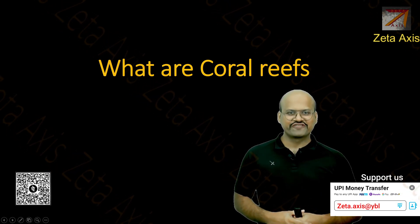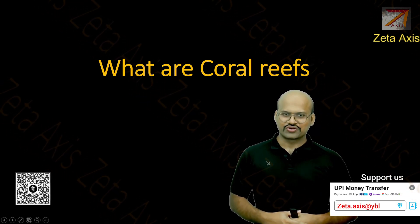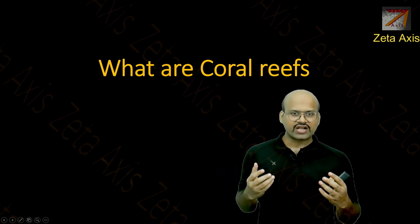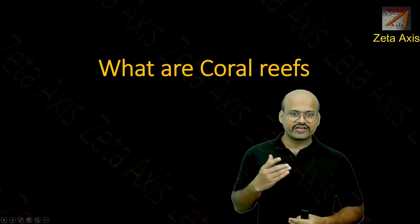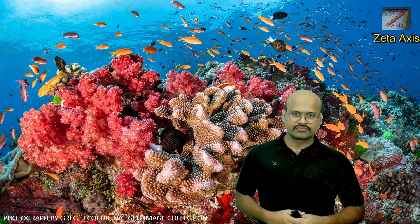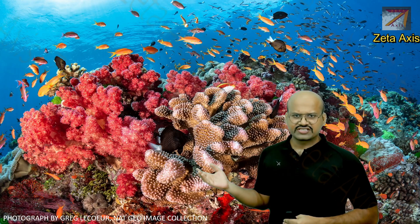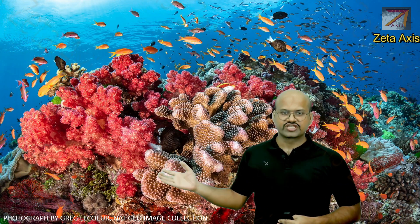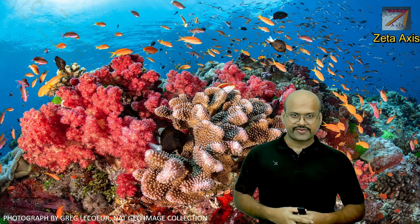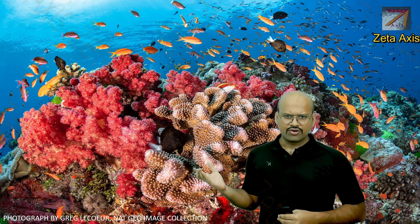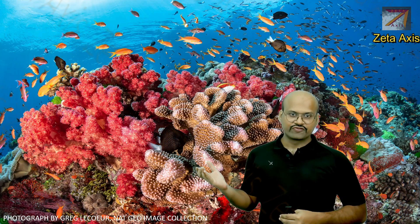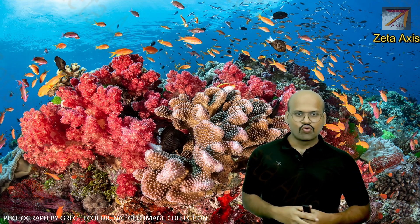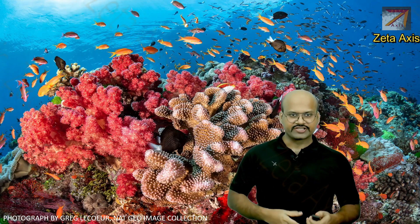Hello friends, welcome to another video of Zeta Axis and today we are going to discuss about coral reefs. We will see what are coral reefs and how these coral reefs are formed. Here you can see an image of a coral reef — these are colorful structures located within the sea. We will see how these colorful structures are formed, why they get these colors, and what they are — whether they are plants or animals.